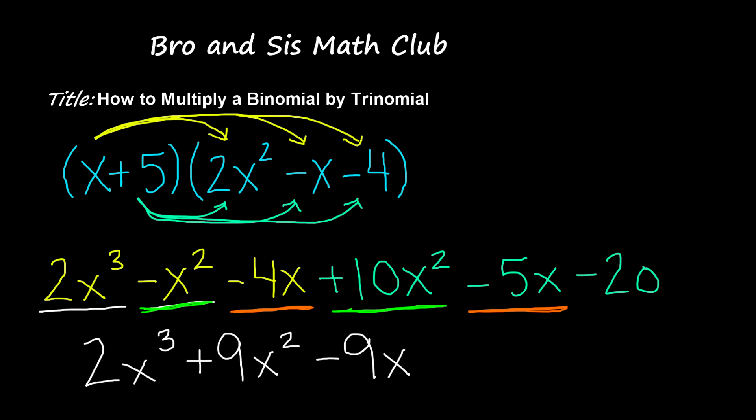And then we also have negative 20. Now there isn't any like term that is a constant. So we're going to go ahead and write negative 20 as it is. So the answer when you multiply the binomial x plus 5 with a trinomial 2x squared minus x minus 4 is 2x cubed plus 9x squared minus 9x minus 20.